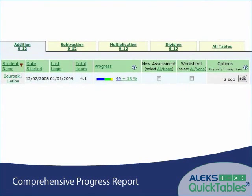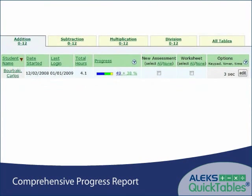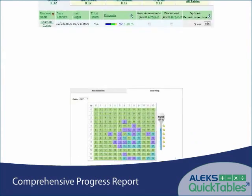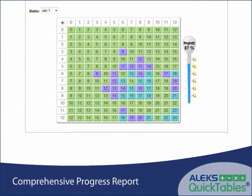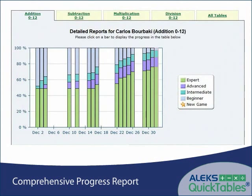Instructors and administrators can also access a comprehensive progress report for each student. This report will show the student's current bar graph for each table. Instructors can view a table for any specific date, as well as a vertical bar graph report showing the student's progress over time.